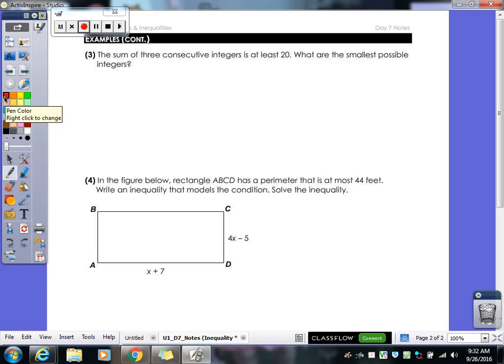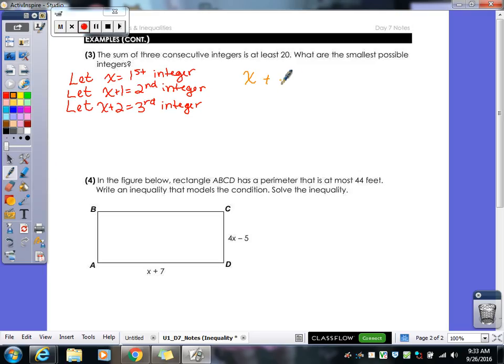All right, number 3. The sum of three consecutive integers is at least 20. What are the smallest possible integers? So we got three of them, so we need three let statements. They just told us they're consecutive integers. So what's our first one going to be? X. So let X equal first integer. Yep, they're consecutive. So the next one would be X plus 1. And what's our third integer? X plus 2. Remember, consecutives go up by 1. Consecutive evens or odds go up by 2.